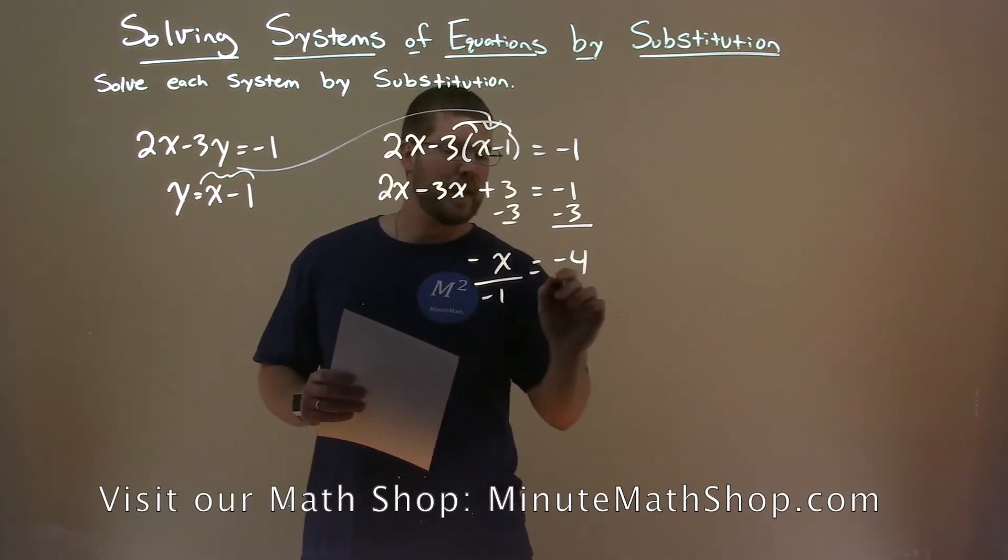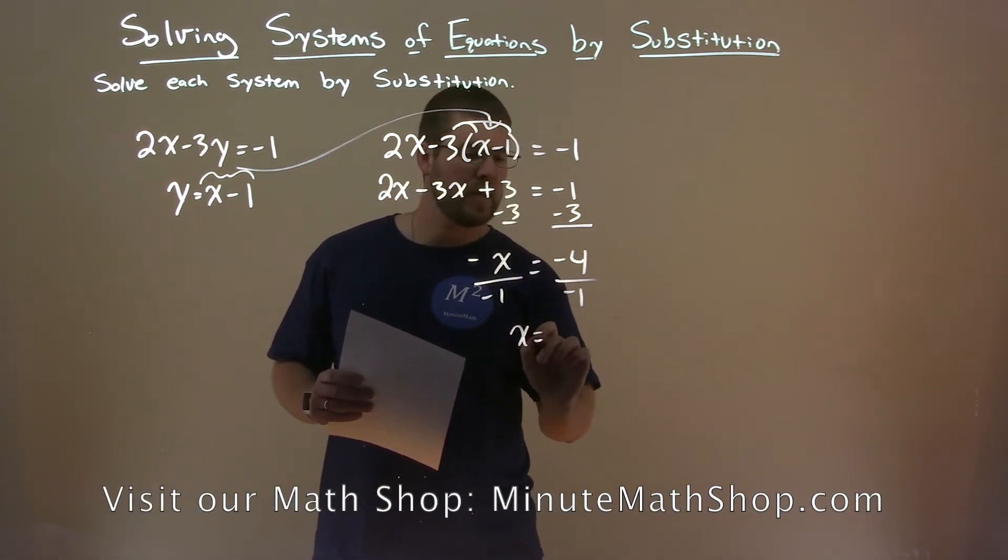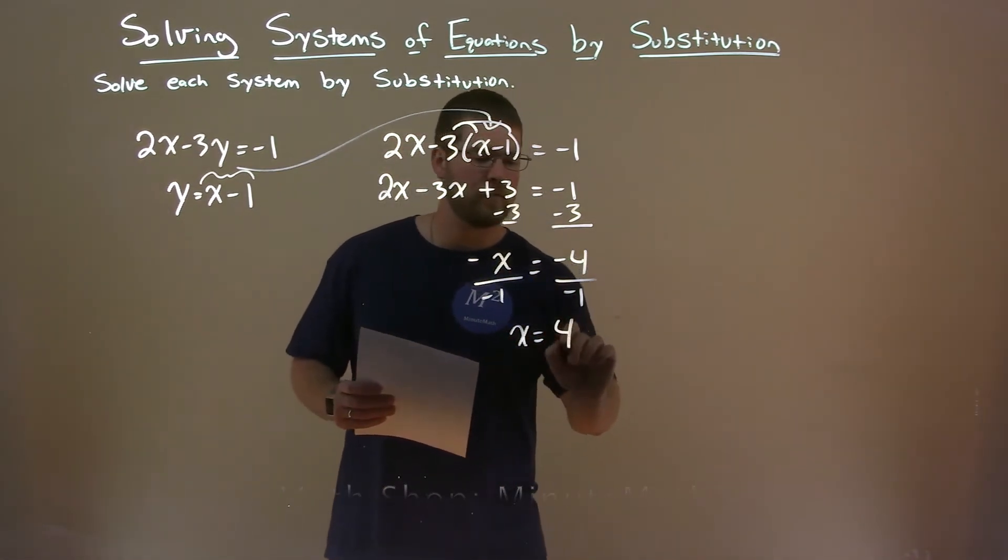From there, divide both sides by a negative 1, and x equals, well, negative 4 divided by negative 1 is a positive 4.